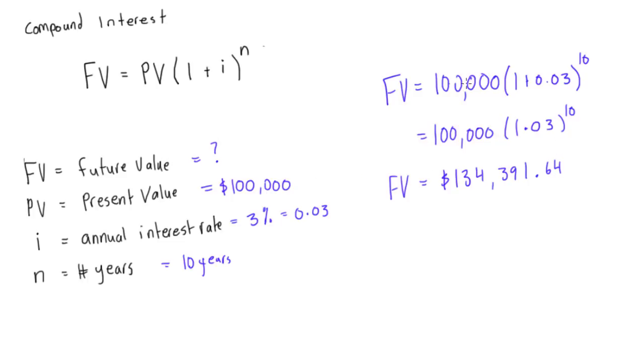So that's how much money you'll have after you invest $100,000 at 3% compounded annually for 10 years.